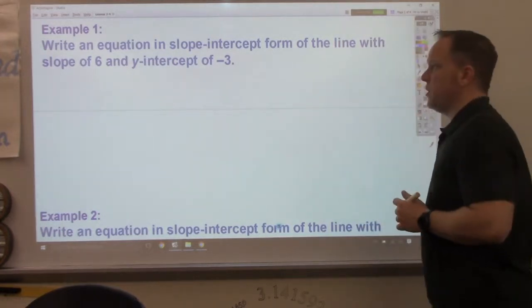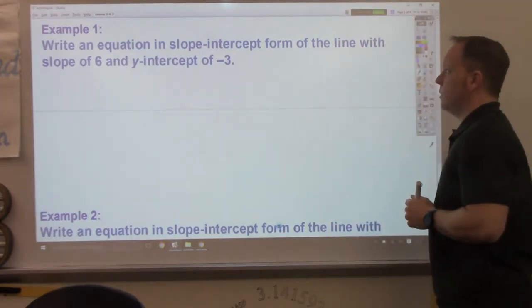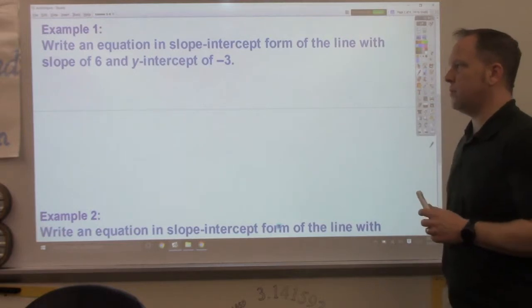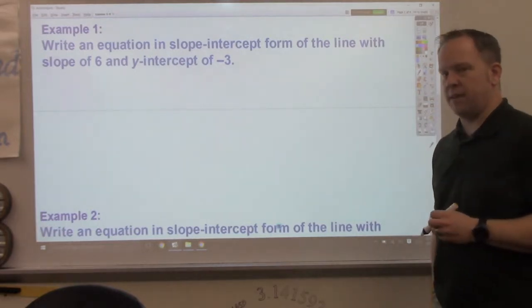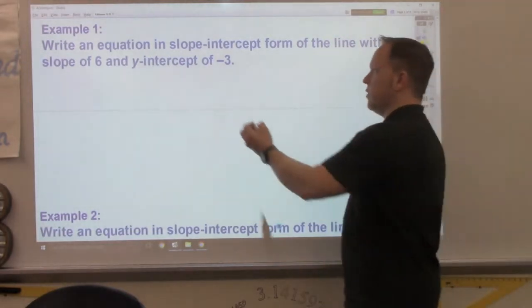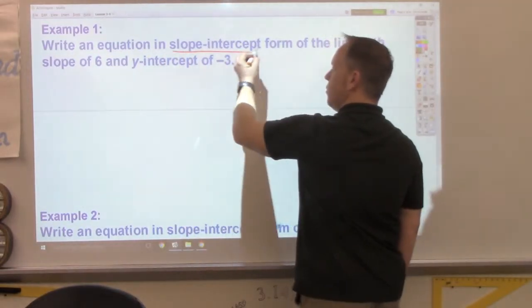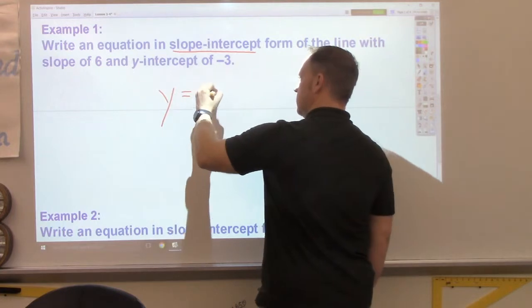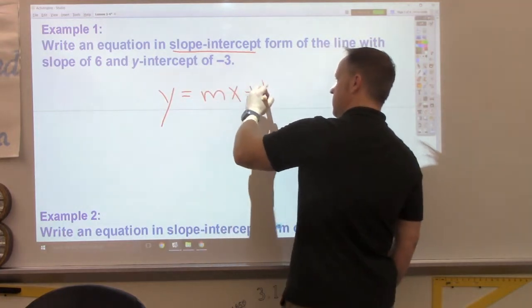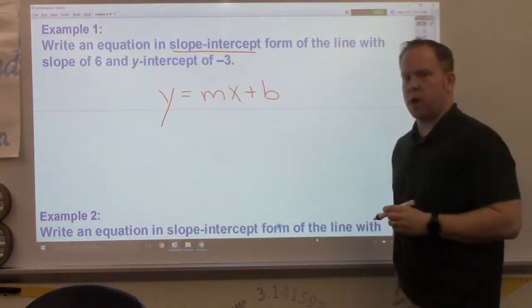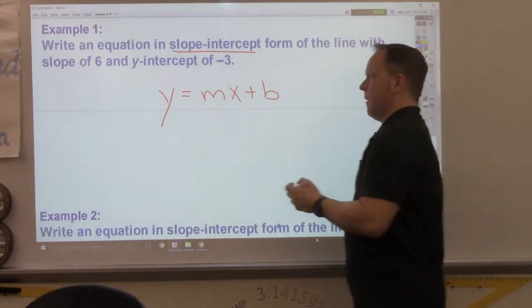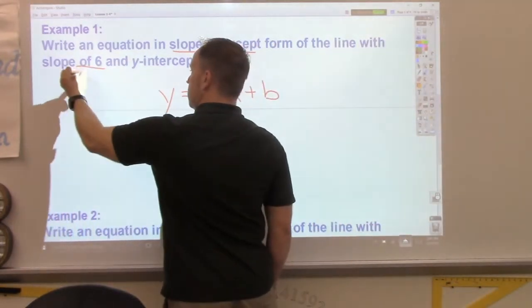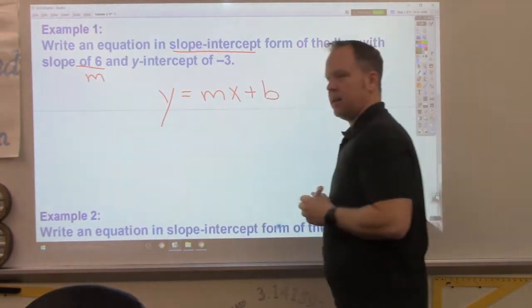Example 1, write the equation in slope-intercept form of the line with slope of 6 and y-intercept of negative 3. Well, first off, they wanted slope-intercept form. We were just reminded that that is simply y equals mx plus b. Slope is 6, that is m.